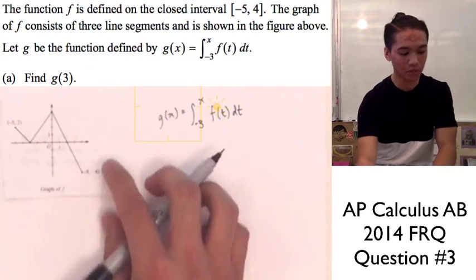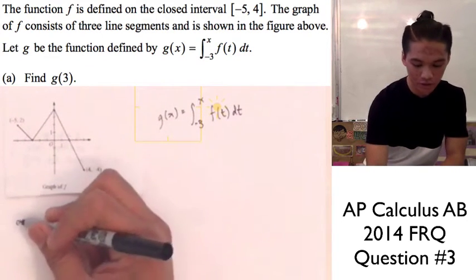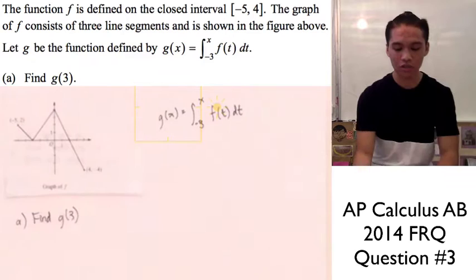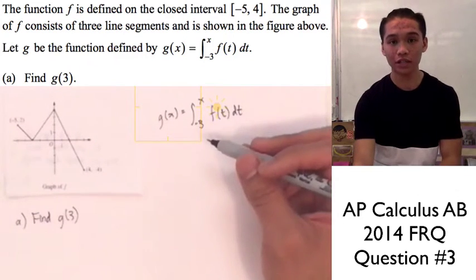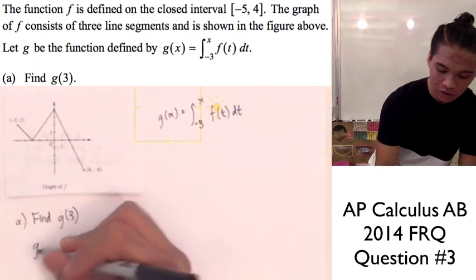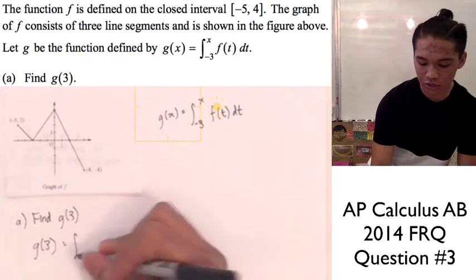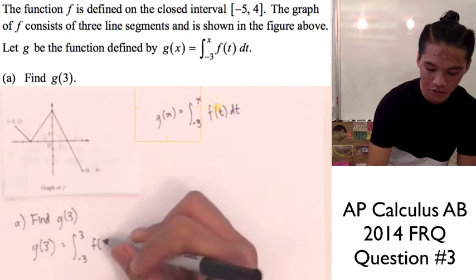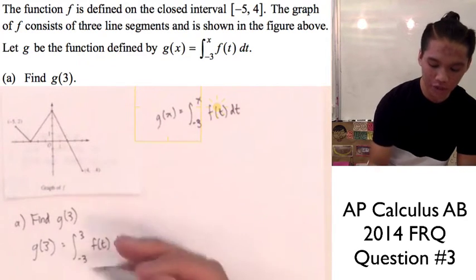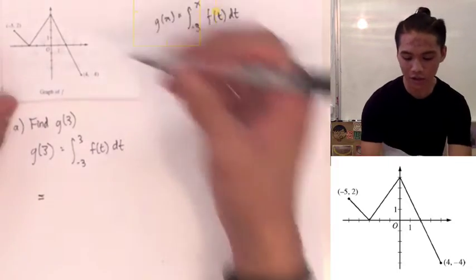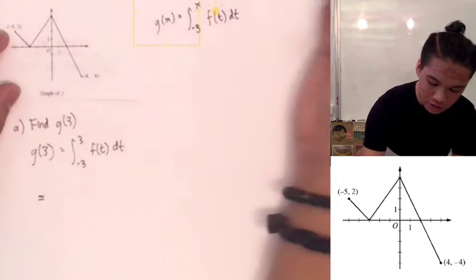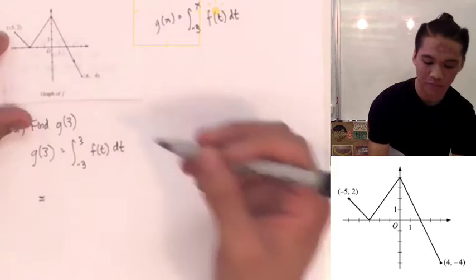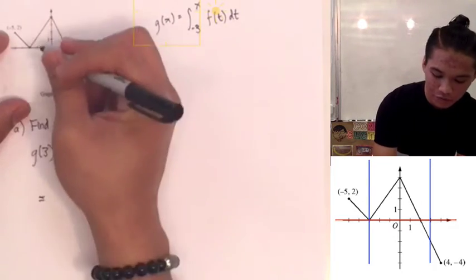Now we can dive into part A. Part A is asking us to find g of 3. For this, we're just going to plug in our value of 3 into our g of x function, so we have g of 3 equals the integral from negative 3 to 3 of f of t dt. If we look at our graph, negative 3 is found here, while positive 3 is found here. So we're going to have to use geometry, and we have this triangle right here.